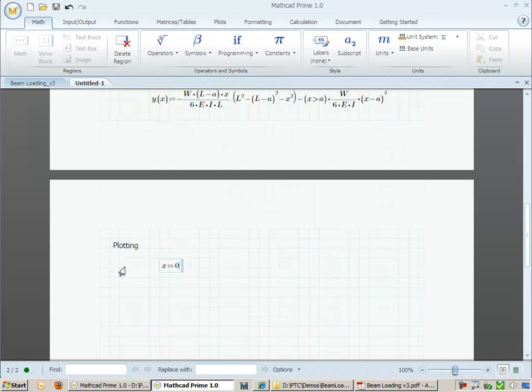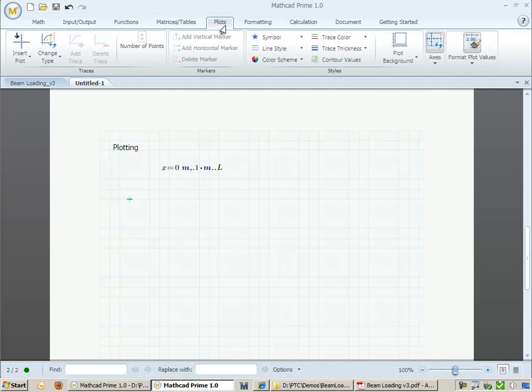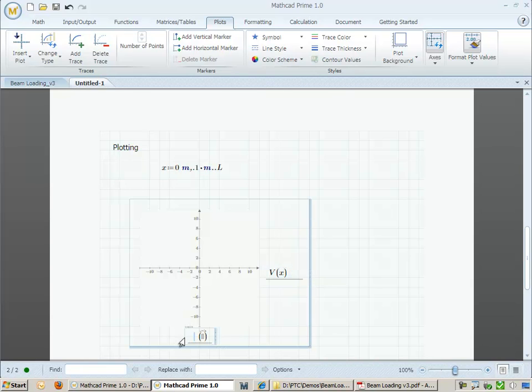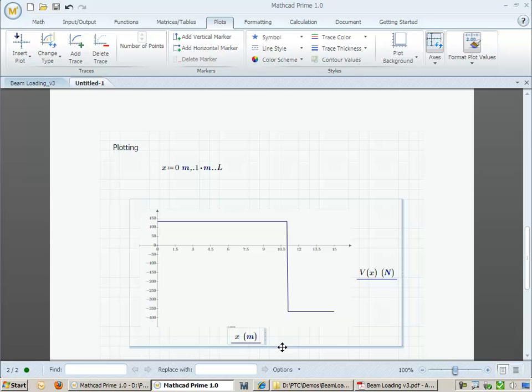Now that we have equations for the shear, moment, and deflection of the beam, let's go ahead and add in some plots. Before we do so, we need to define an independent variable, x. To add a plot, I can scroll over to the Plots tab on the ribbon menu.